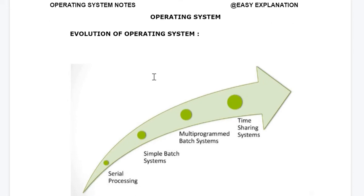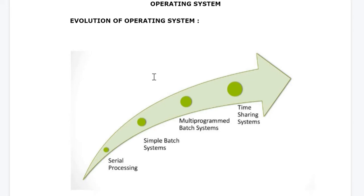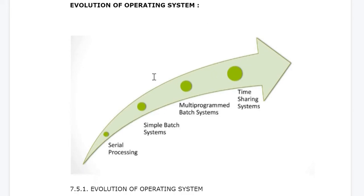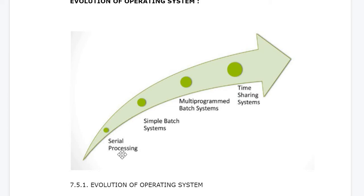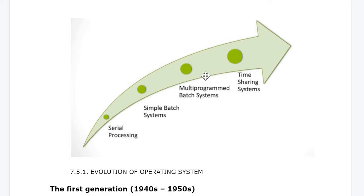Today's subject is operating system and the topic I am going to discuss is the evolution of operating system. As you can see in the diagram, the evolution of operating system started with serial processing, then went to simple batch system, then multi-program batch system, and finally time-sharing system.